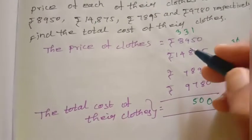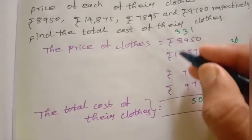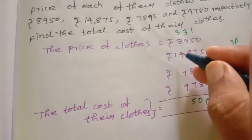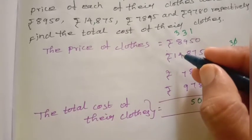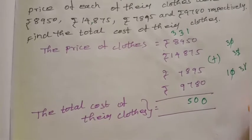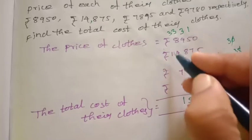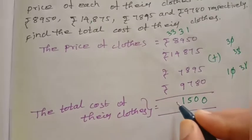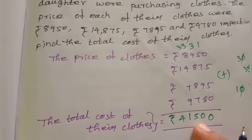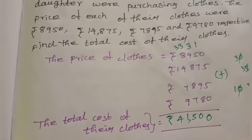Now add: 7 plus 3 is 10, plus 9 is 19, plus 4 is 23, plus 8 is 31. Write 1 in place, remaining 3. 3 plus 1 is 4. The total amount of cloth purchased is 41,500.